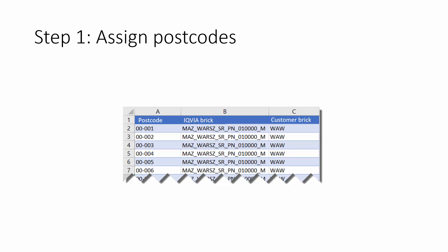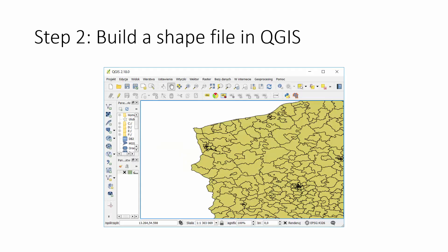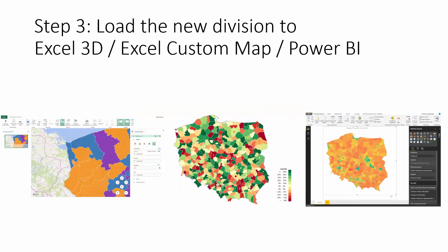We started with assigning postcodes, then we created a shape map in QGIS, which we have already seen within this course. At the end we can deliver the map in any technology — Excel, three-dimensional custom Excel map, Power BI, or any other tool you can imagine — and then you can start reporting. This is of course just one of the examples.